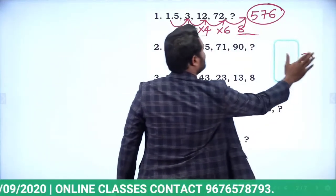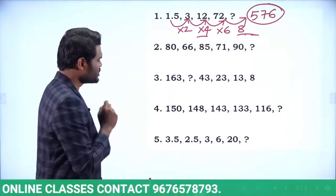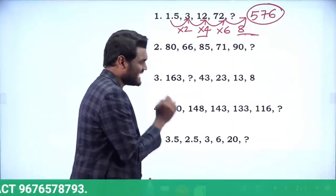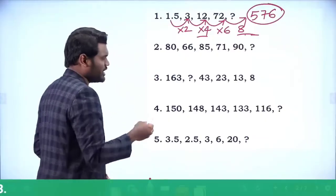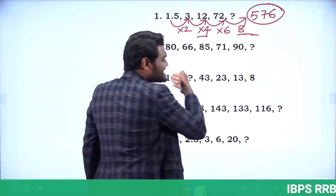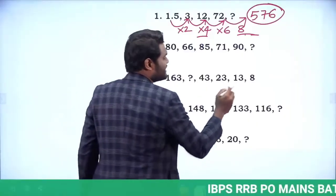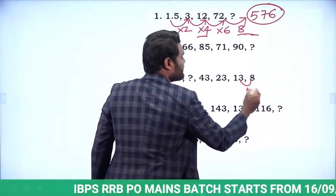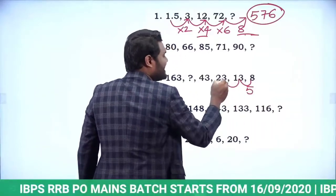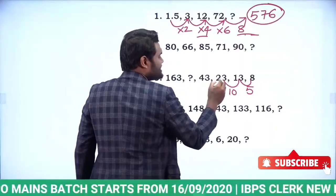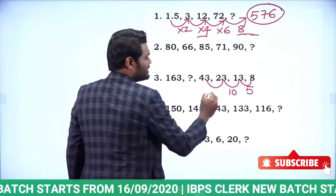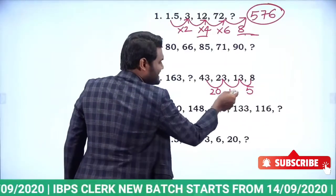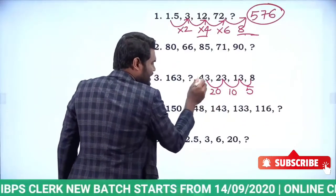The next question is: 163, question mark, 43, 23, 13, 8. The series is gradually decreasing. Taking the differences: 8 and 13 differ by 5; 13 and 23 differ by 10; 23 and 43 differ by 20.